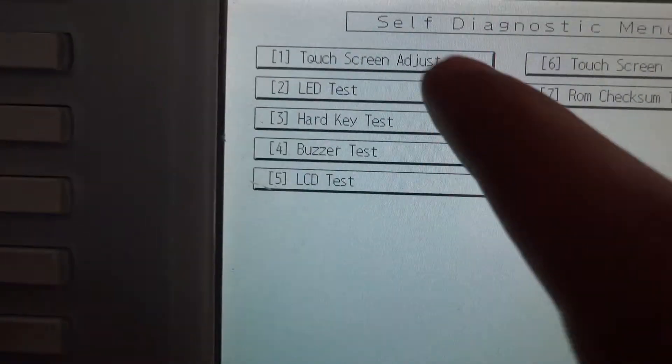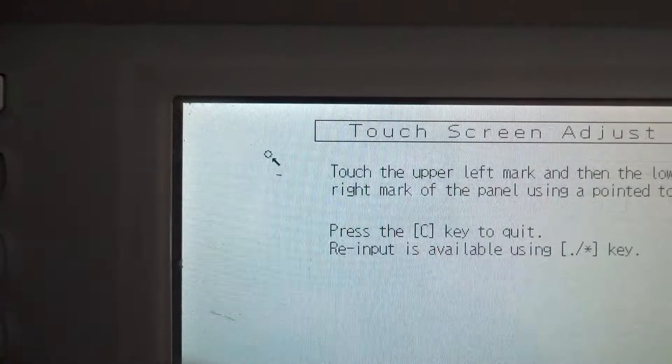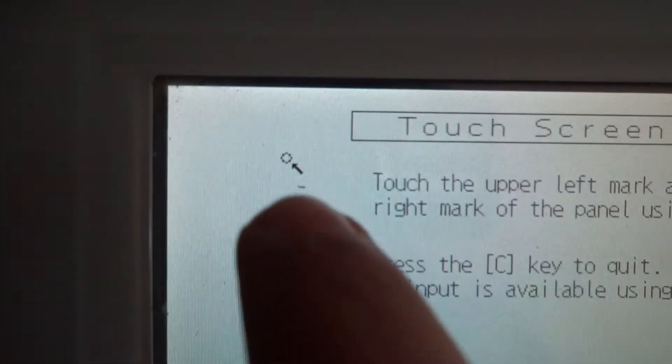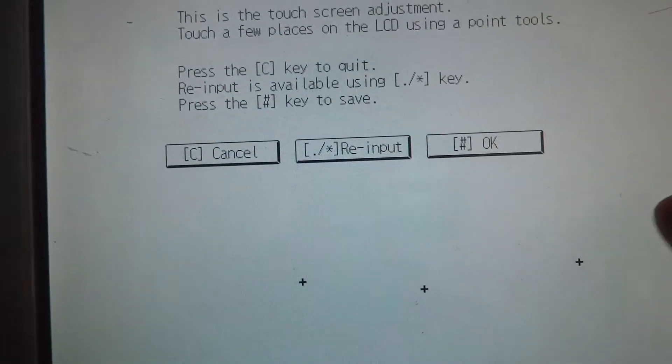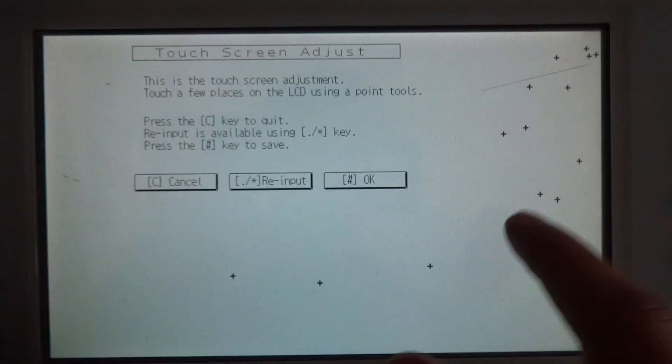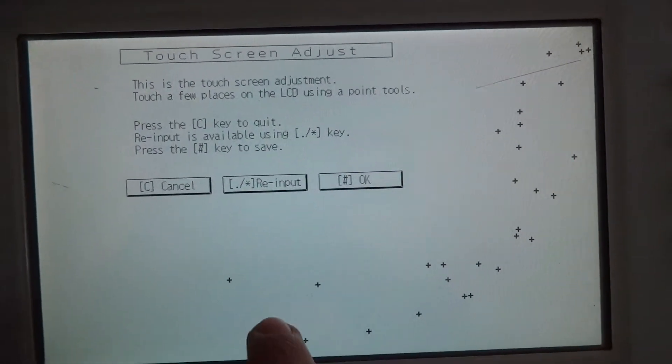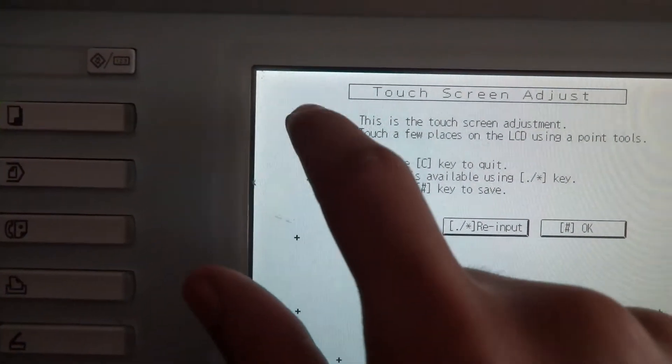You are going to press Touch Screen Adjust and press this sign, then this one. And then you are going to touch every inch of the screen just like that. Keep tapping on every inch of the screen.